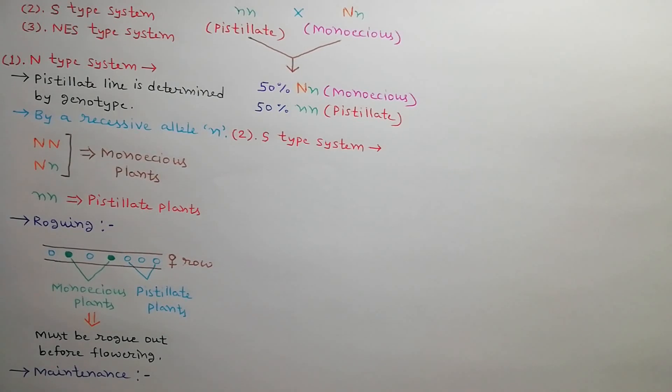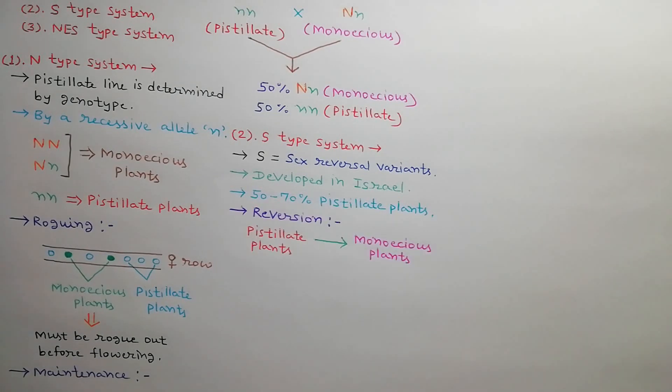Second is S type system. S means sex reversal variance. This system was developed in Israel. Only 50 to 70% plants are pistillate in a pistillate line in this system. Pistillate plants revert into monoecious plants at different stages of development.